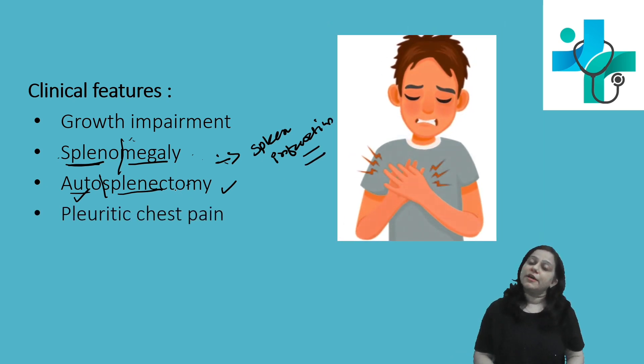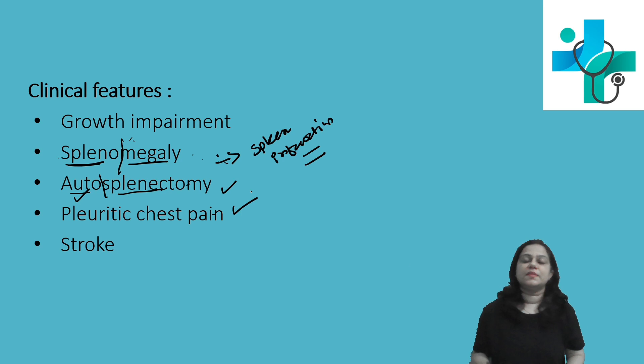There will be blockage of the chest blood vessels also, which causes pleuritic chest pain. Blockage of the cerebral blood vessels will cause stroke. So these are important clinical features related to sickle cell anemia.